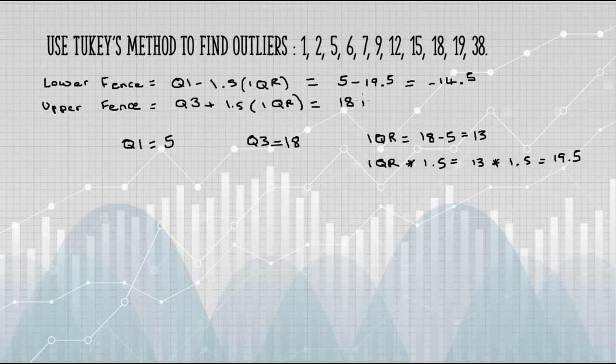For the upper fence, we add that 19.5 to Q3, which gives us 37.5. Add those fences to the data.